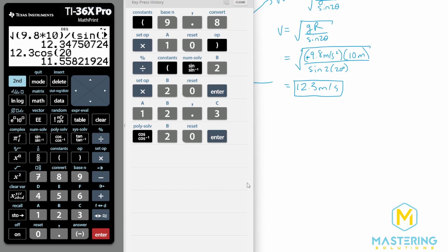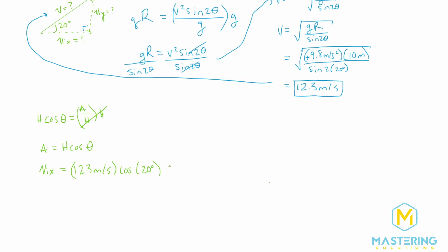So 12.3 times the cosine of 20 gives us 11.5, so 11.6. We could round that to 12. So 11.6, which is 12 meters per second, is the x component for the kangaroo. So it's mostly x component. The y component isn't that much. It's mostly jumping in the horizontal direction.